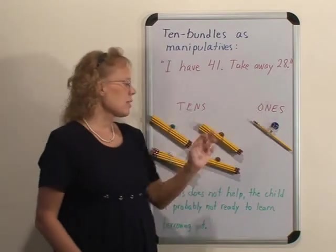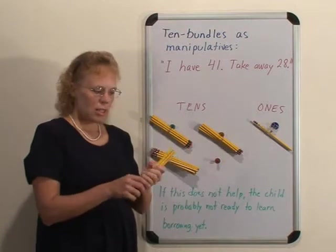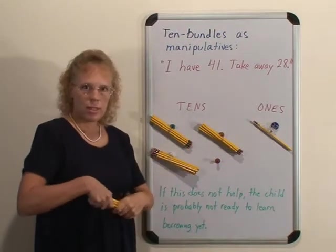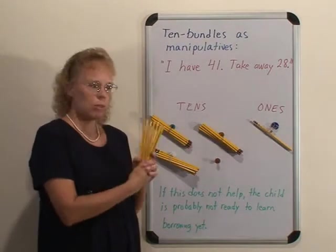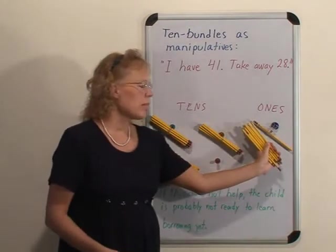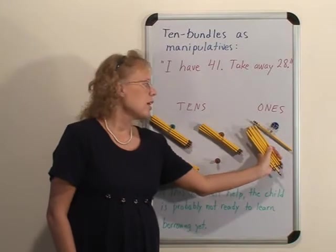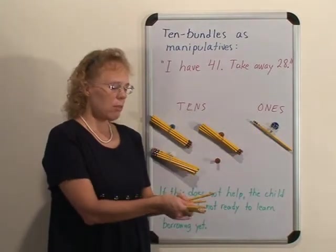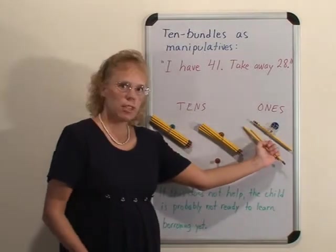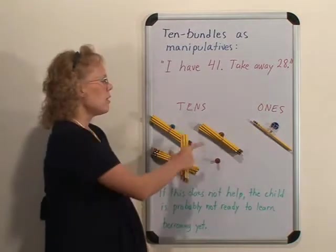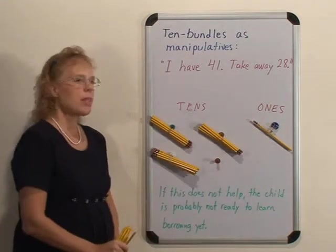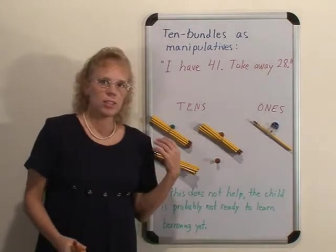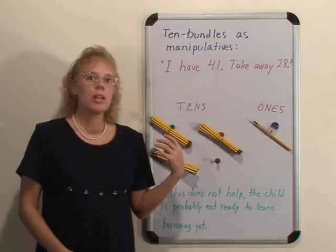So how do I do that? I can take away 20 pencils easily, it would be these two bundles. But to take away the 8 pencils, the child has to take one bundle and unbundle it. That's the regrouping part, when you unbundle it and you have now 10 loose pencils plus the 1 loose pencil, 11 loose pencils. From this 11 you can easily take away 8 loose pencils, leaving 3 loose pencils, and then those 2 tens are taken away leaving 1 ten.